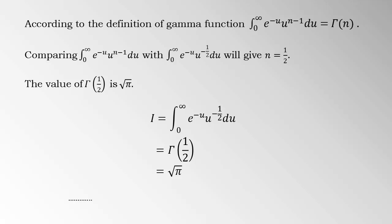According to the definition of gamma function, integral 0 to infinity, e raised negative u, u raised n minus 1 du is equal to gamma of n.